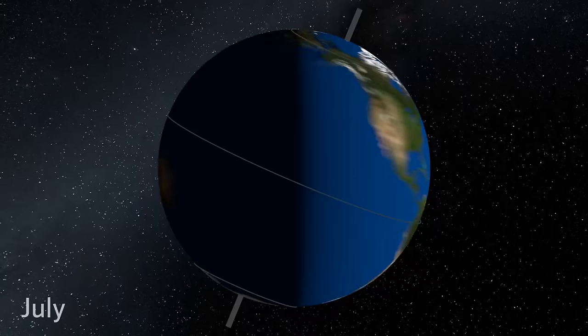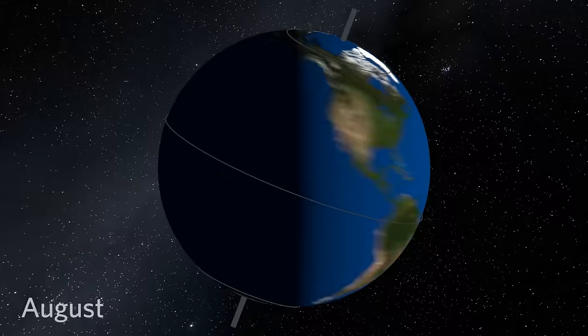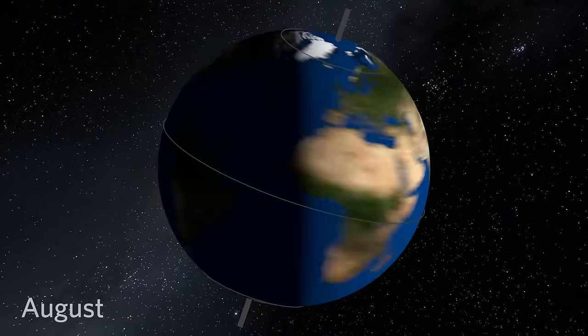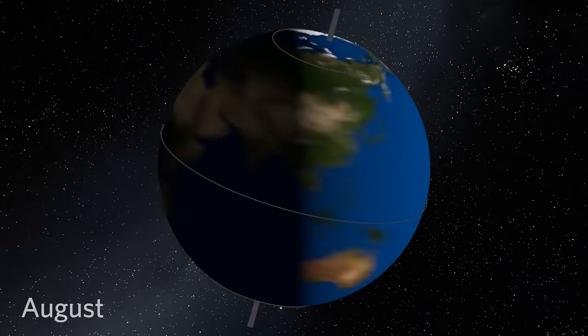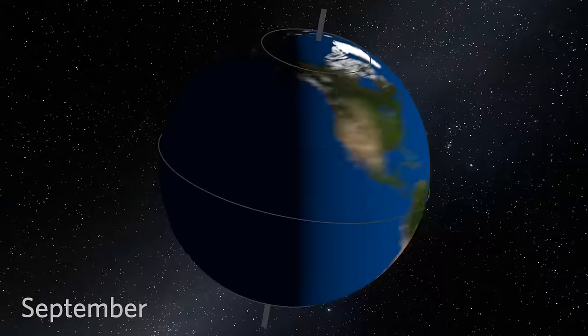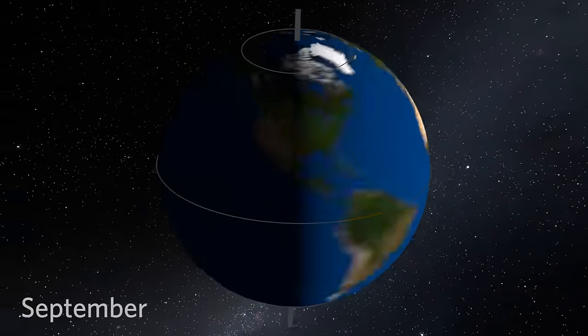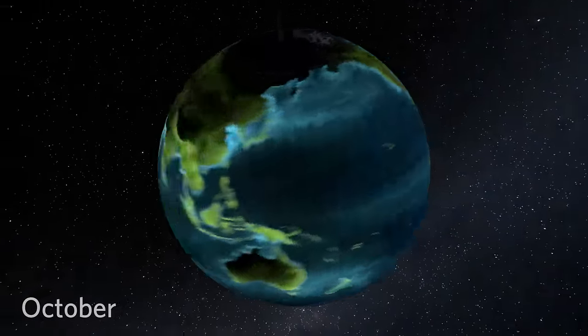We observed how Earth's tilt creates the different seasons throughout the year. How does this affect life? Plant life and other photosynthesizers, we call them primary producers, depend on sunlight. They respond to the changes in the seasons.